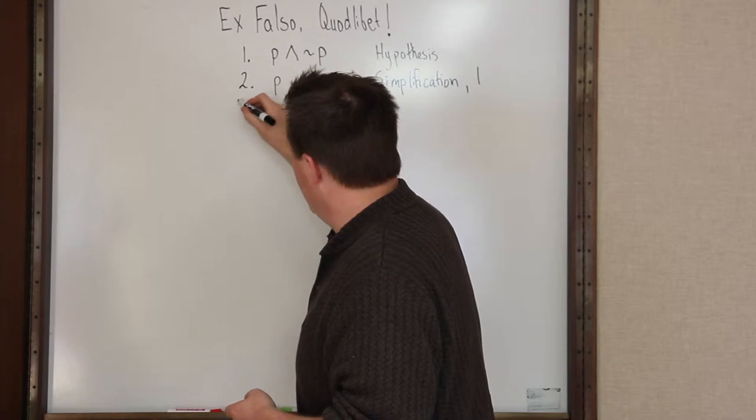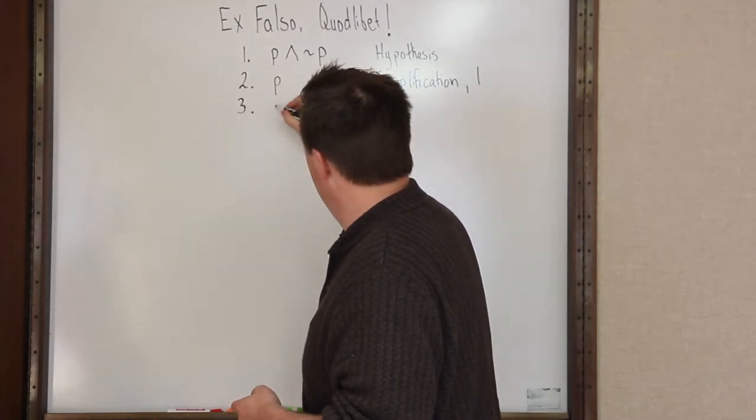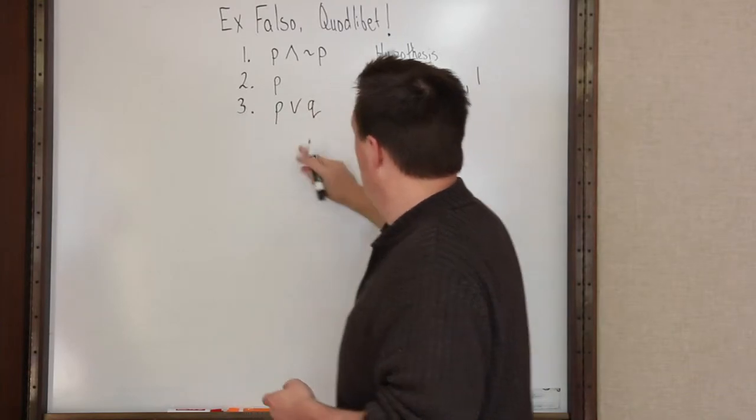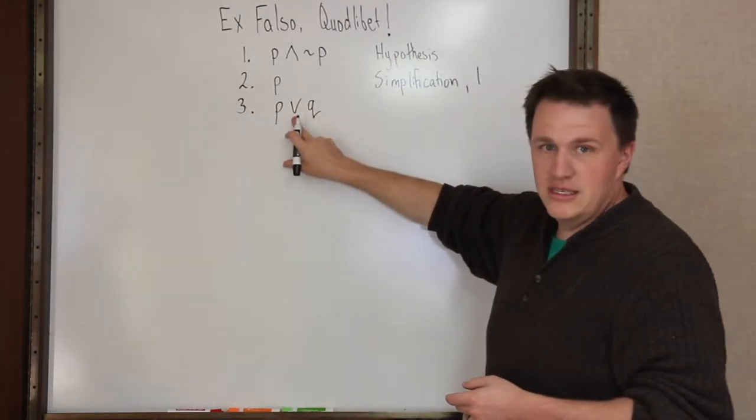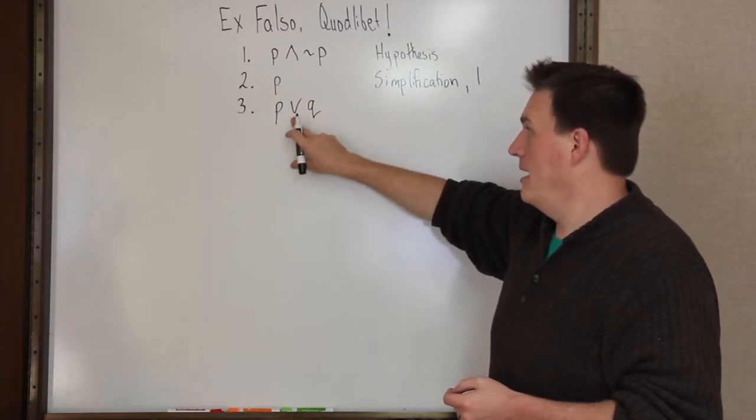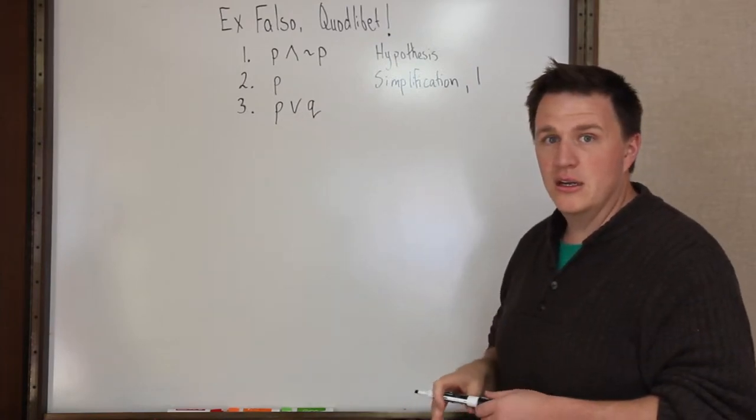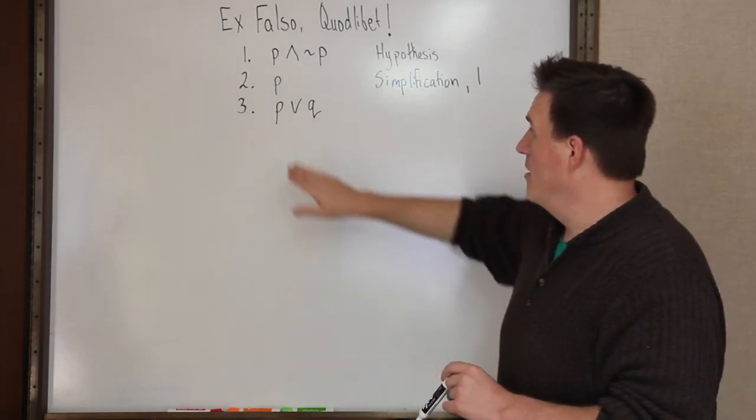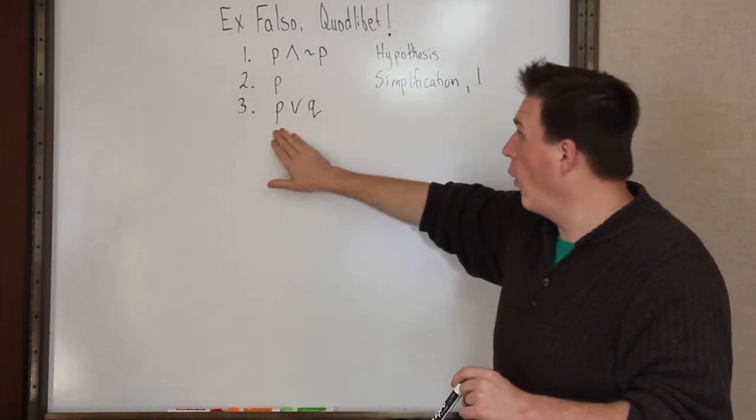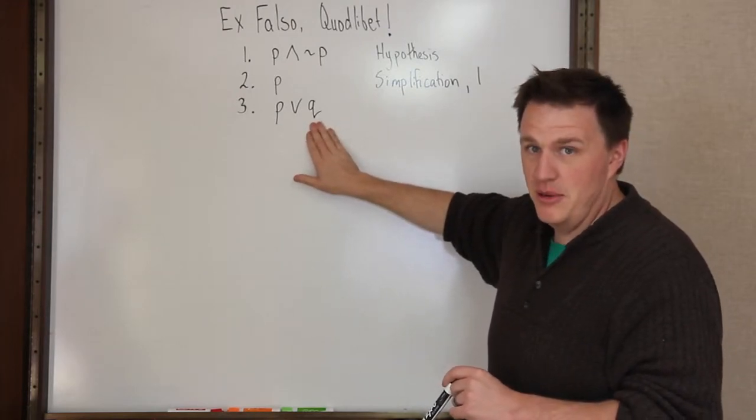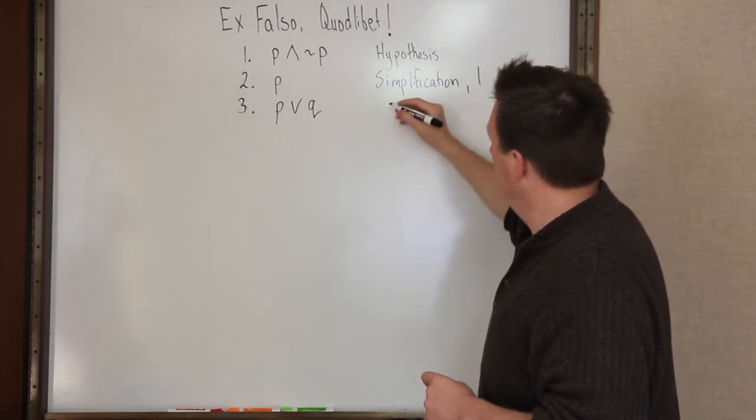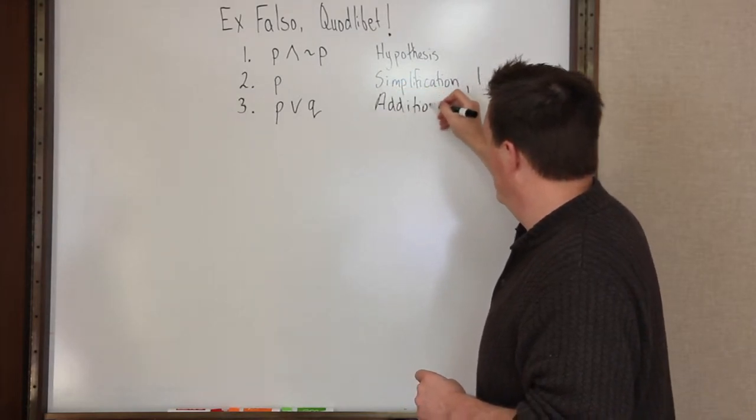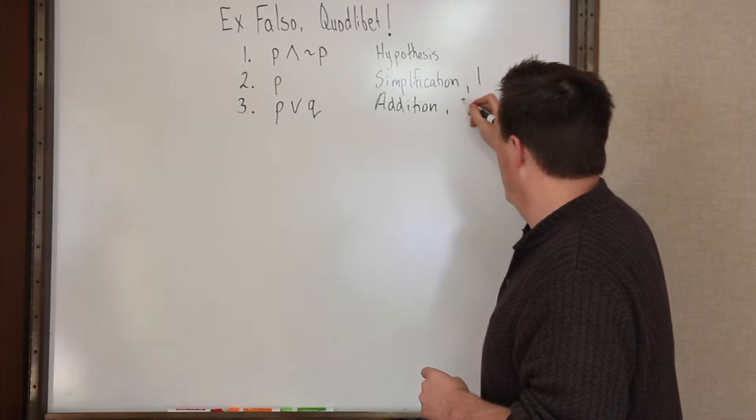Then your next sentence is P or Q. This is the or symbol. In logical notation, or is called inclusive or, which means that one half of the sentence may be true or both halves of the sentence may be true. You're allowed to do this by the logical rule of addition applied to line number two.